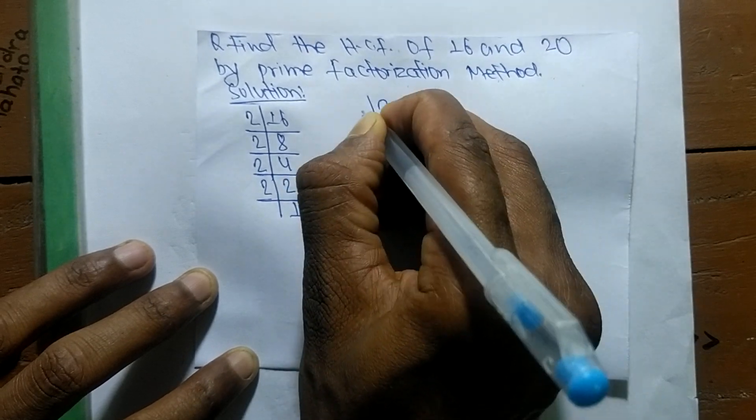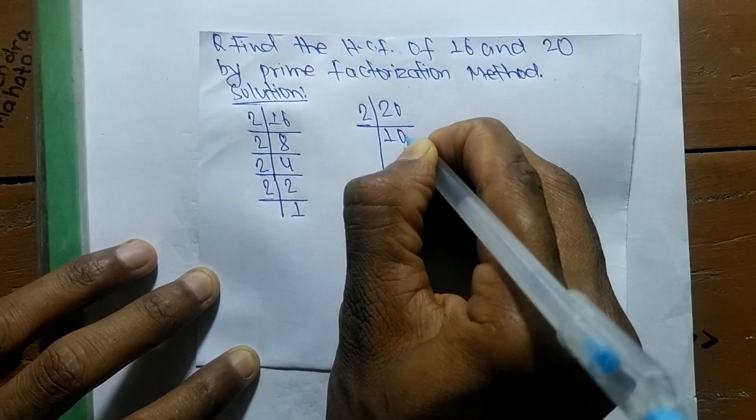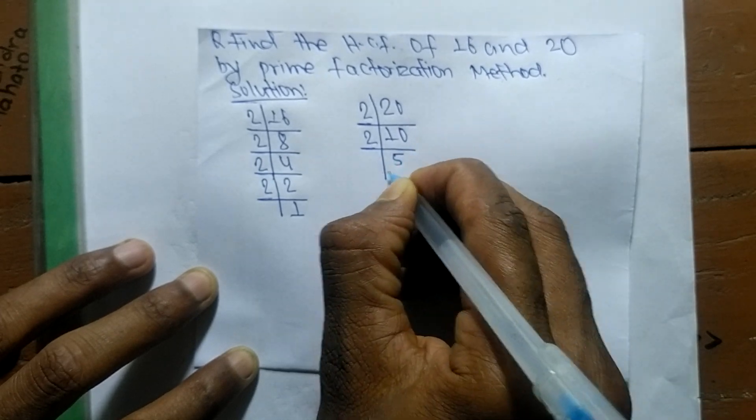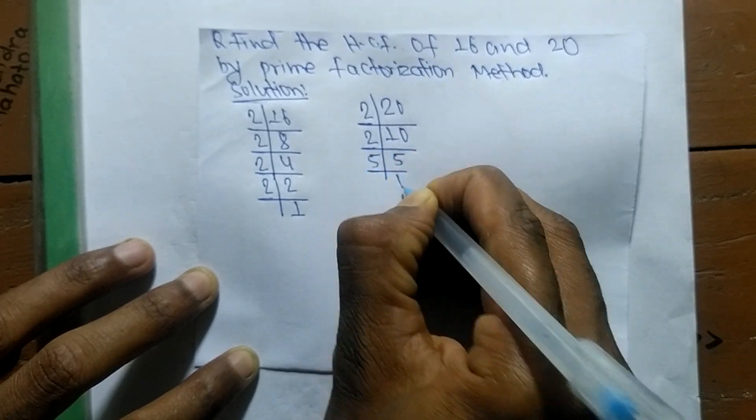The prime factors of 20 are: 2 times 10 means 20, 2 times 5 means 10, and 5 times 1 means 5.